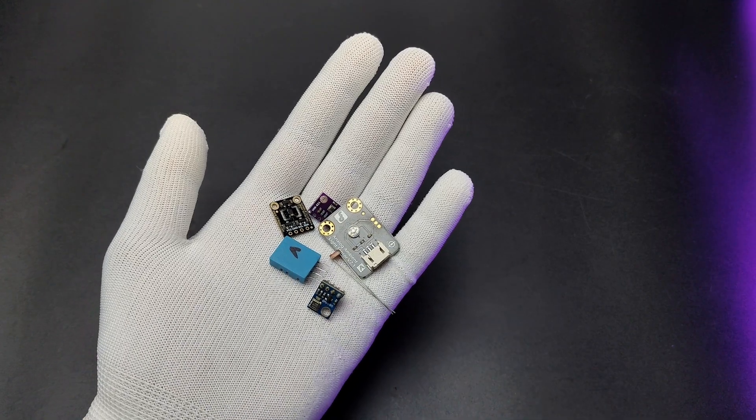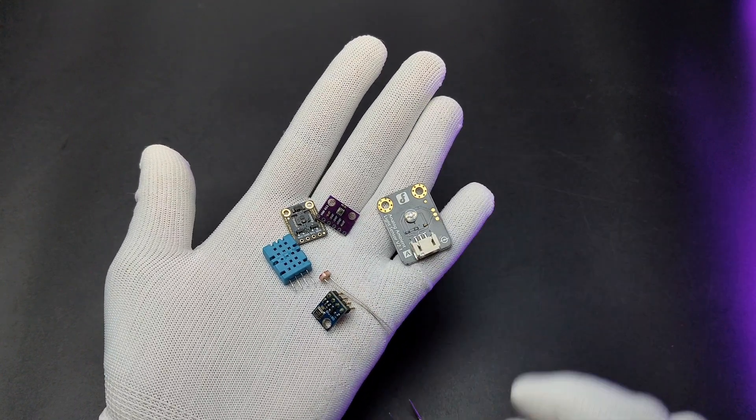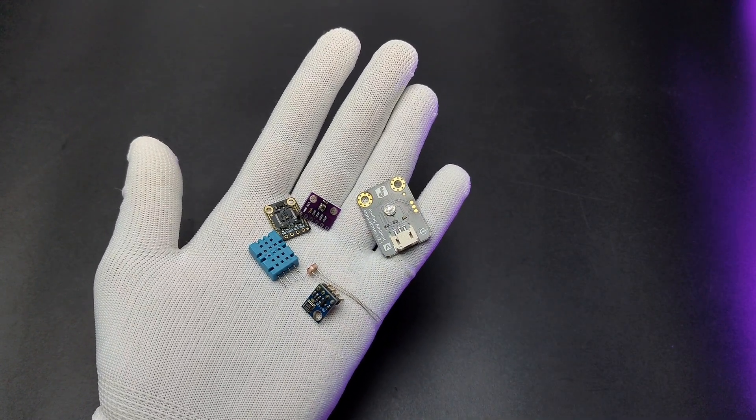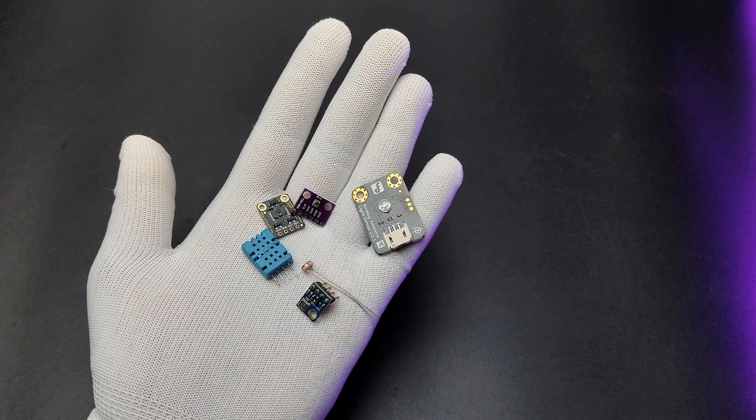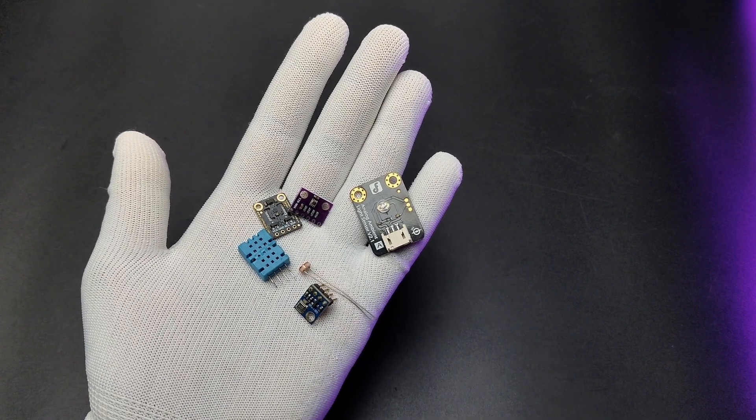But when we want to measure different types of parameters in a single project, like an environmental monitor project, we need to use all these sensor modules. This will increase the use of more GPIOs, size of the project, power consumption, etc.